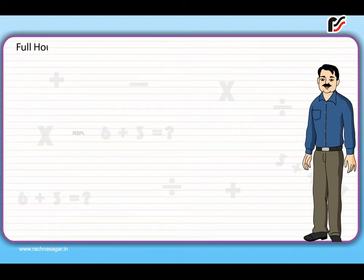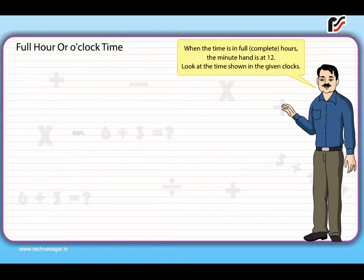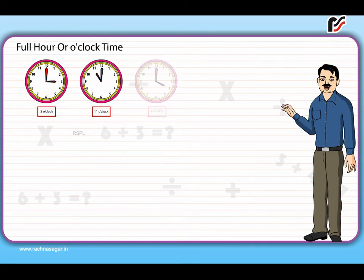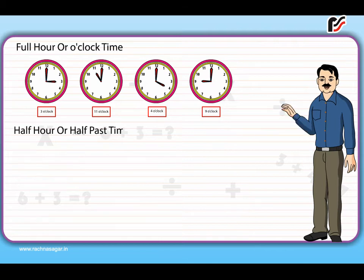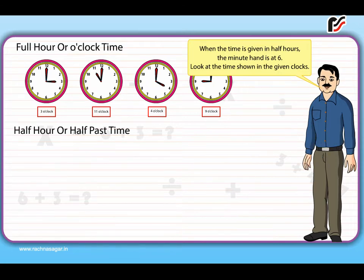Full hour or o'clock time: When the time is in full, complete hours, the minute hand is at 12. Look at the time shown in the given clocks. Half past or 1:30: When the time is given in half hours, the minute hand is at 6. Look at the time shown in the given clocks.